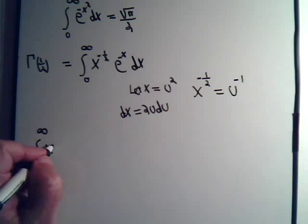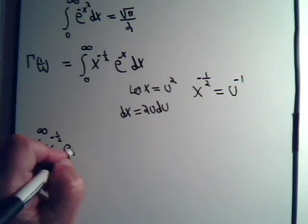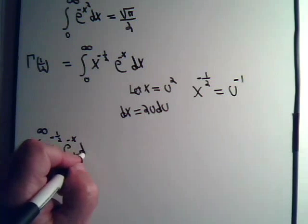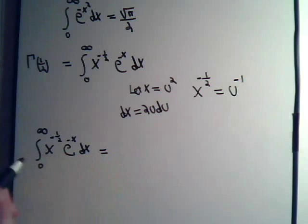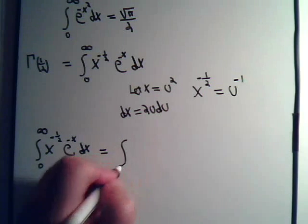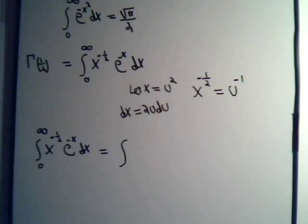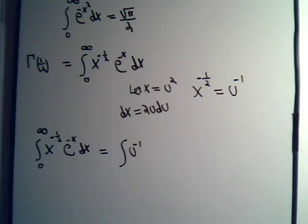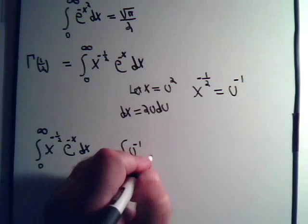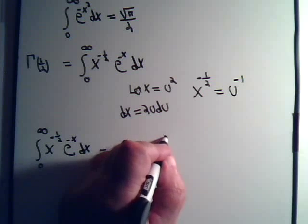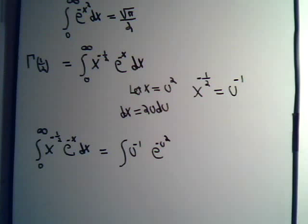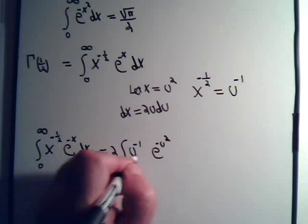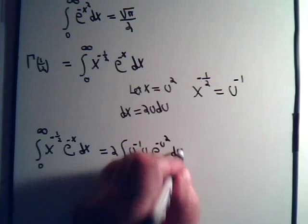We have this integral of x to the minus one half, e to the minus x dx. That's going to equal u to the minus one, and then e to the minus x — that would be e to the minus u squared — and dx, that's equal to 2 times u du. Taking the 2 to the outside, we have u du.